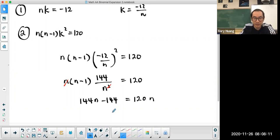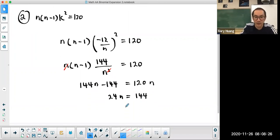So bring all the n's to one side and subtract, I get 24n equals 144. 144 divided by 24 is going to give you 6. So therefore, the value of n is equal to 6.